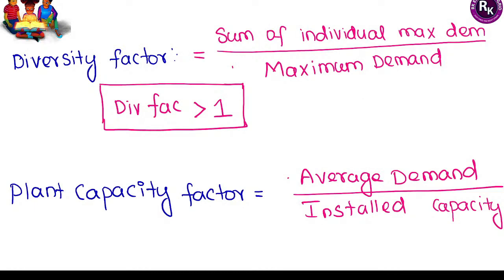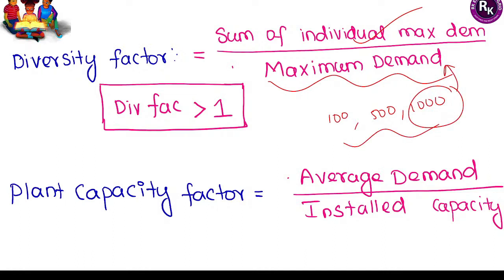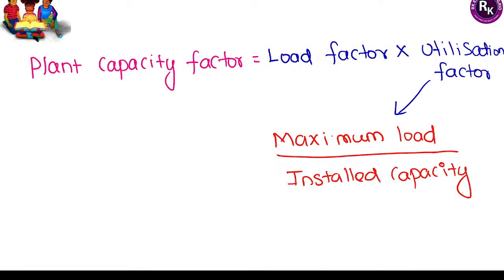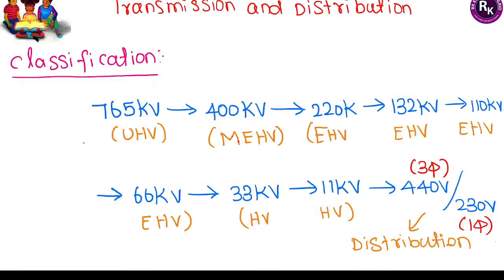Diversity factor is the sum of individual maximum demands divided by the maximum of those individual demands. Since the numerator is always higher than the denominator, diversity factor is always greater than one. Plant capacity factor is the average demand divided by installed capacity of the power plant. It can also be written as the product of load factor and utilization factor, where utilization factor equals maximum load divided by installed capacity.